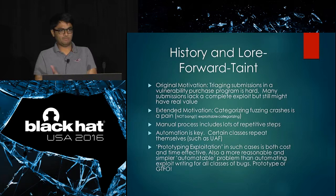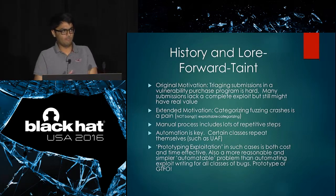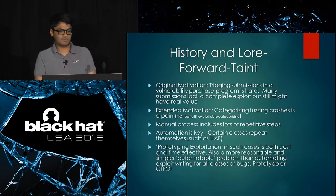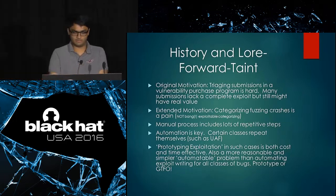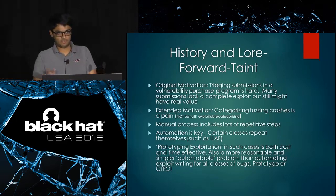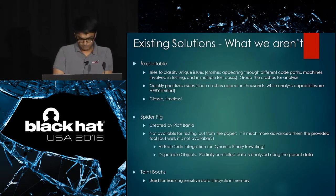You can view this as prototyping exploitation. Through backward taint we answer whether you have control; through forward analysis we ask: if you have control, can you find an exploitable primitive after the crash? We mimic object control from within the debugger rather than using a full one-click exploit-writing solution, which is a much more difficult problem.